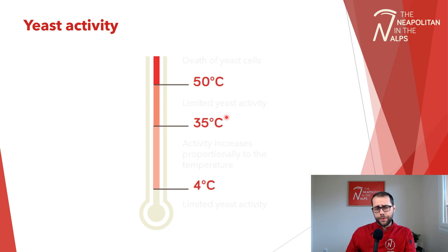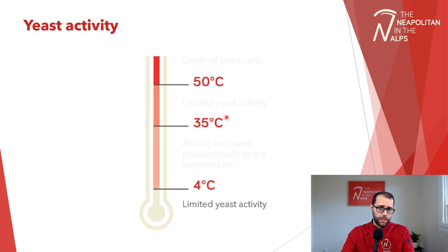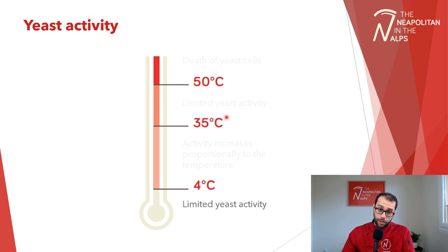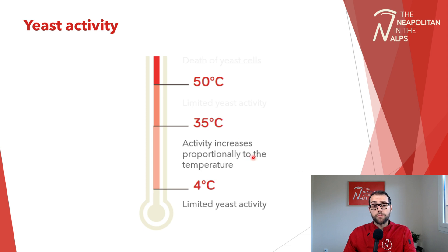Below 4 degrees, we have very limited yeast activity. This limited activity is true for all microorganisms in the dough — bacteria and enzymes included. Once we go above 4 degrees and below 35 degrees, the activity of the yeast increases proportionally to temperature. In other words, the warmer the dough temperature, the higher the yeast activity and the higher the intensity of the fermentation.